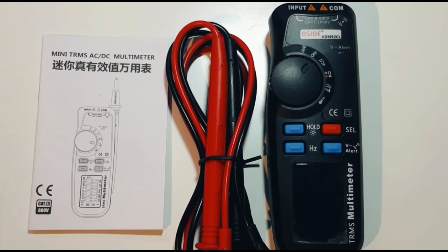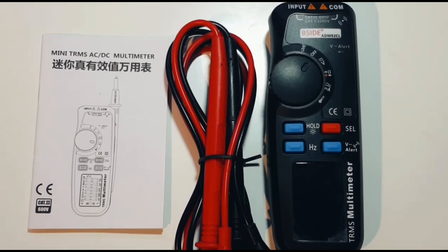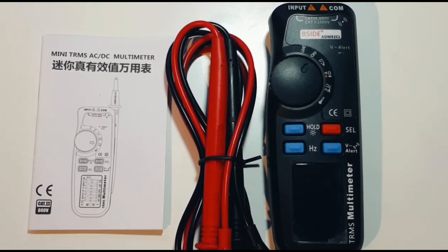It's the B-Side Digital Multimeter, the ADM92CL. Something new, something a little different. It's not your typical looking multimeter, that's for sure. It has a lot of functions. It has voltage, current, resistance, frequency, capacitance, temperature, continuity, live wire check, and diode.